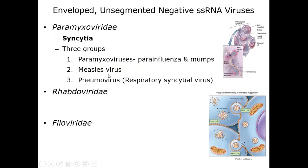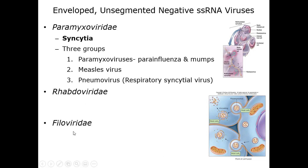All viruses in the paramyxoviridae group cause infected cells to fuse together into one big cell called a syncytia, which is great for the virus as it can replicate and move easily. The three subgroups within paramyxoviridae are the paramyxoviruses, the measles virus, and the pneumoviruses. Also in this enveloped unsegmented negative sense single-stranded RNA section are the rhabdoviridae and filoviridae groups.